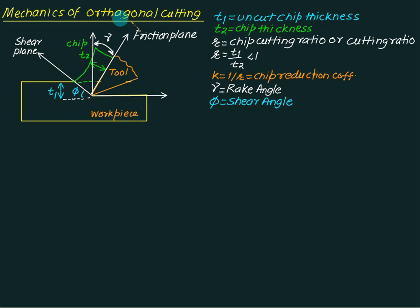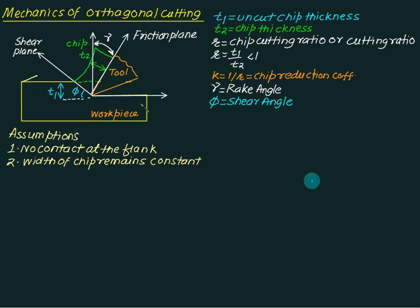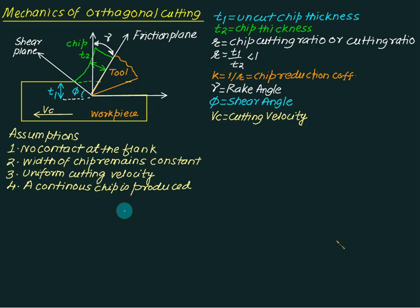Before we start our analysis of mechanics, there are certain assumptions in orthogonal cutting. The first assumption says there is no contact at the flank — that is, the tool is perfectly sharp. The second assumption is that the width of the chip remains constant. The third assumption is that the cutting velocity vc always remains constant. The fourth assumption is that the material is ductile and a continuous chip is produced without any built-up edge.